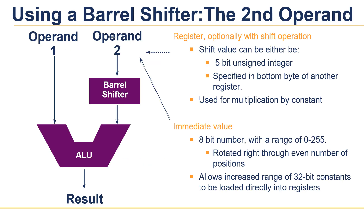The barrel shifter is a functional unit which can be used in a number of different circumstances. It provides five types of shift and rotate which can be applied to operand two. These are: LSL (logical shift left), LSR (logical shift right), ASR (arithmetic shift right), ROR (rotate right), and RRX (rotate right extended).